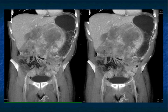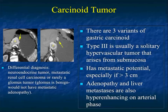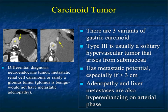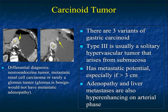Sometimes large retroperitoneal masses involving the stomach can fool you — that's just going to happen. There are other tumors that we need to think about that are less common. One of them is a carcinoid tumor. Carcinoids are vascular — you see nodes that are vascular. The differential might be a neuroendocrine tumor, metastatic renal cell to the stomach, or even a glomus tumor. Type 3 carcinoid is usually a solitary hypervascular tumor that arises from the submucosa — that's the most common type. They do have malignant potential and can produce liver metastases.